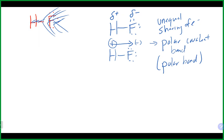Why is this a partially negative charge and a partially positive charge rather than full charges? Because there is still some active sharing of electrons happening. In contrast, ionic bonds have a complete transfer with no sharing, resulting in full positive and negative charges on the ions. In a polar bond there's still some sharing, so we only get partial charges.